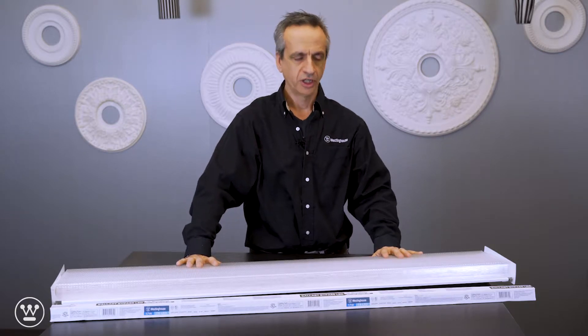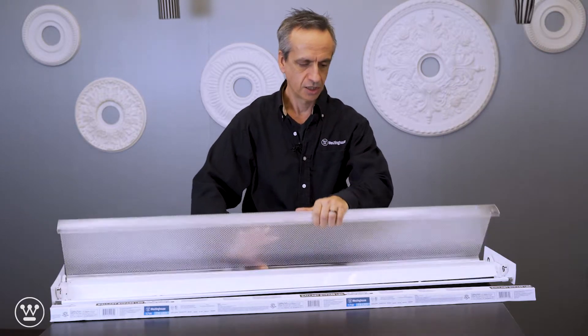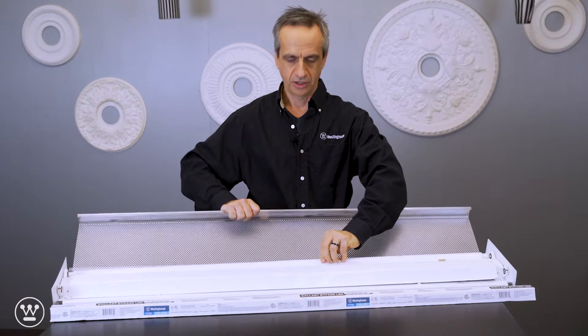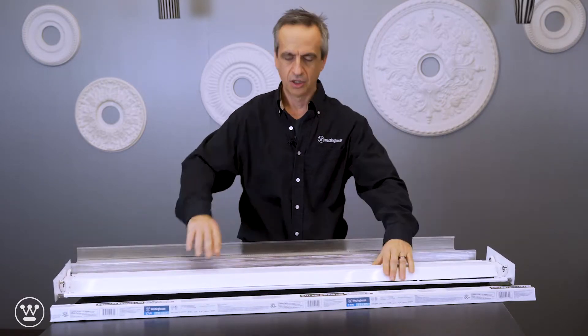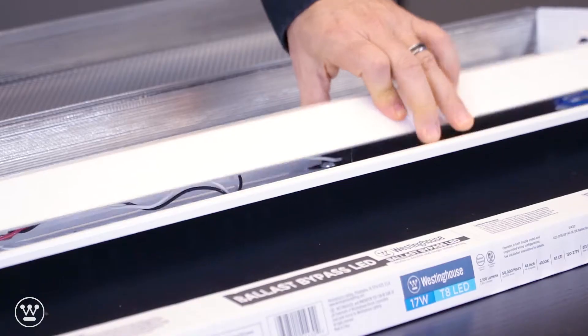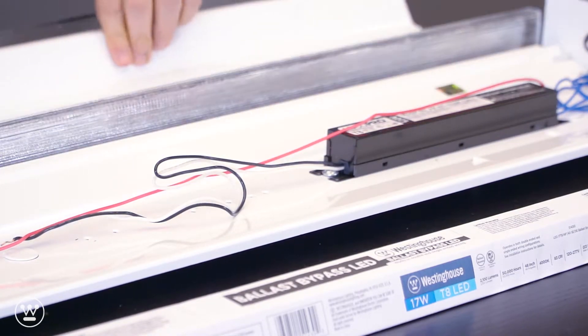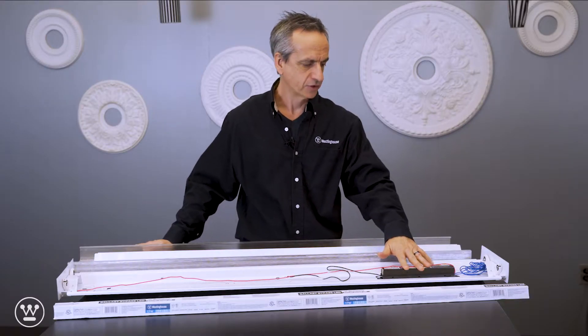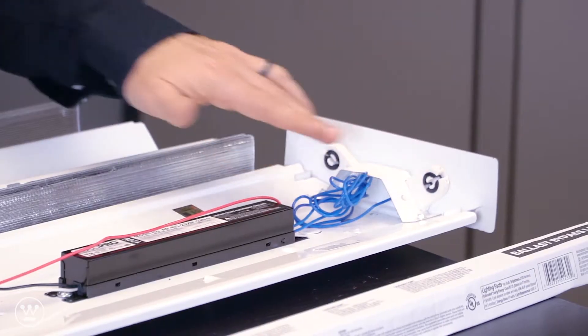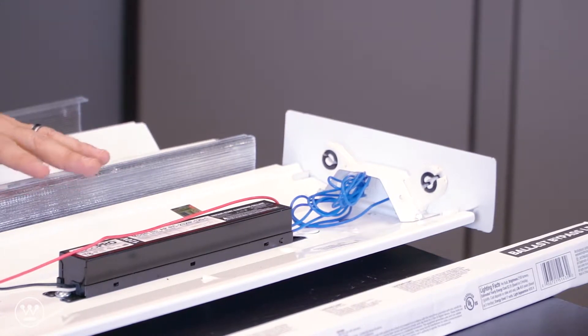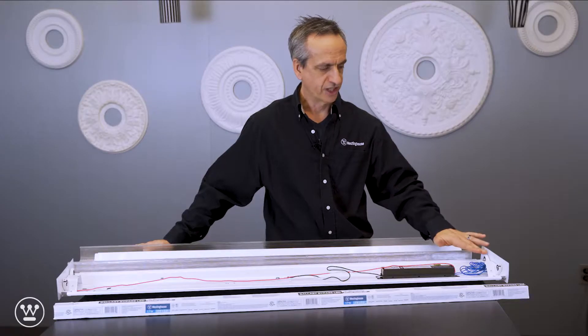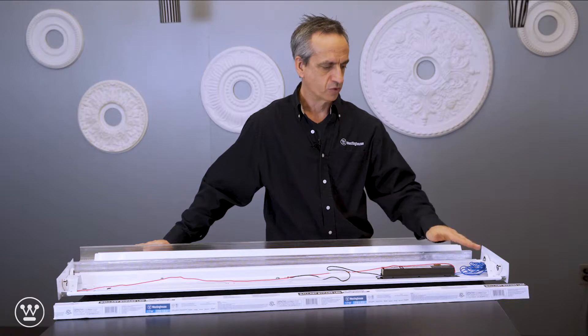The first fixture we'll be converting is going to have a single-ended wiring configuration. It's a ballast bypass, so we're going to have to remove the ballast and make sure that the tombstones or sockets are non-shunted. We'll be testing, and if they are shunted, we'll replace them.